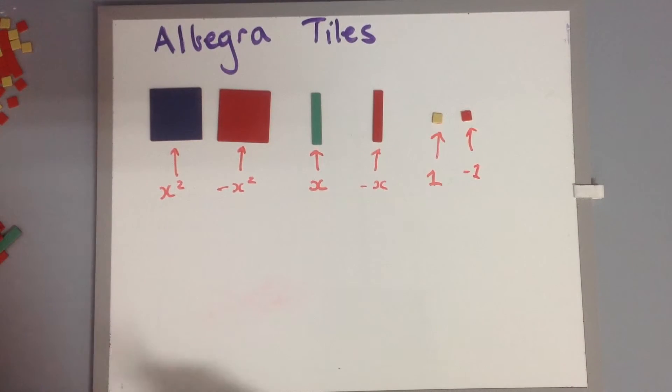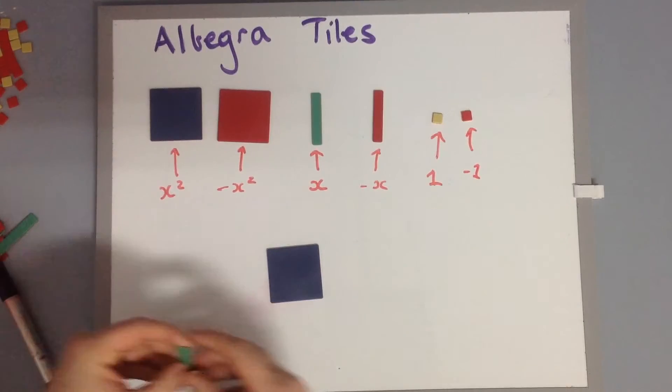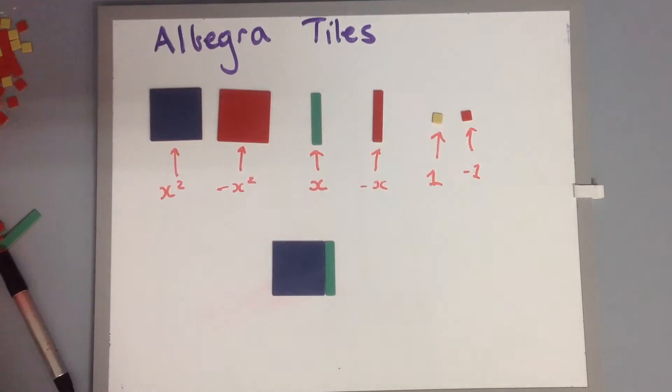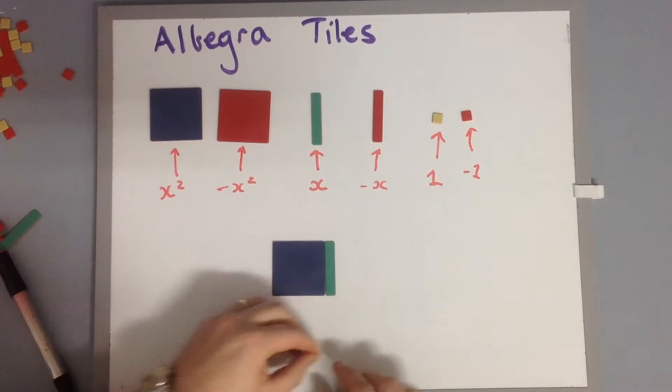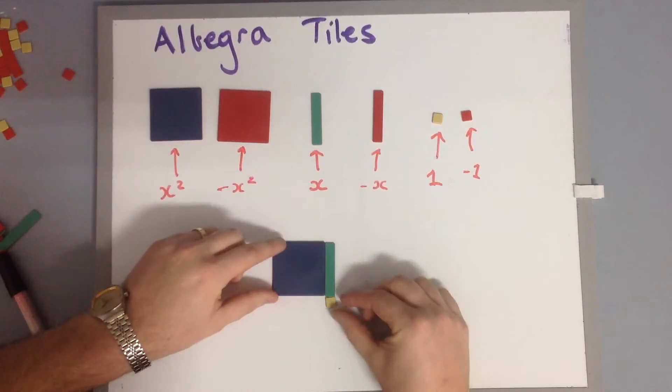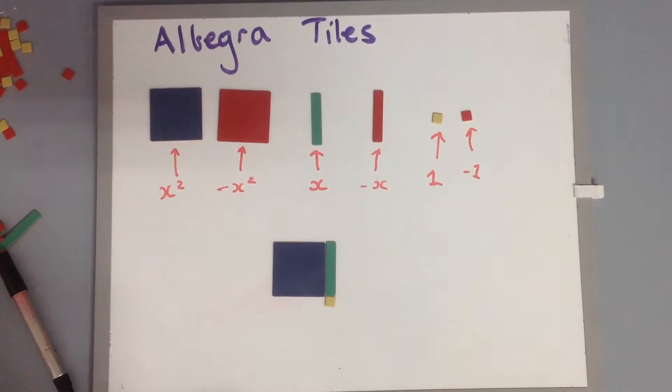Now you'll also notice if we have a look here that these are actually the same length, and that our little squares are the same width as these long ones. That's deliberate because it allows us to do a lot of work.